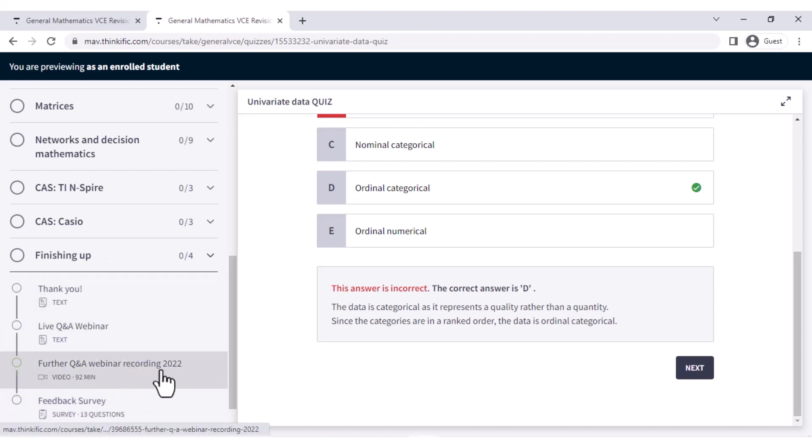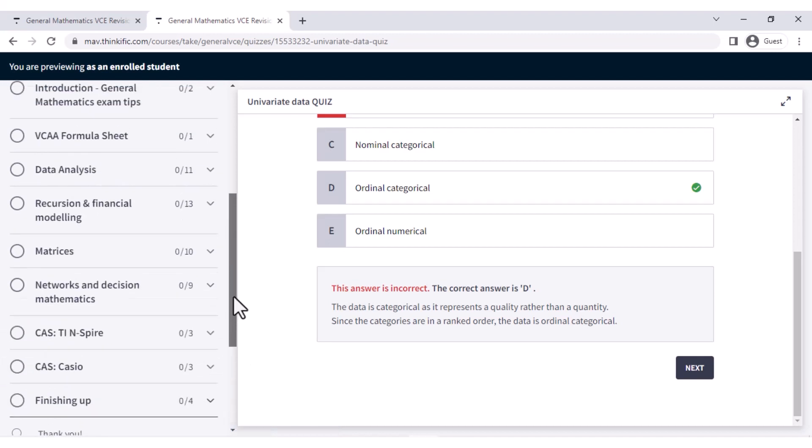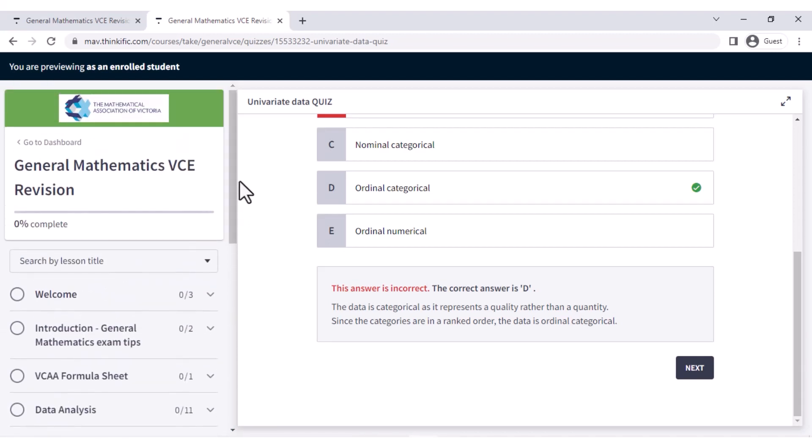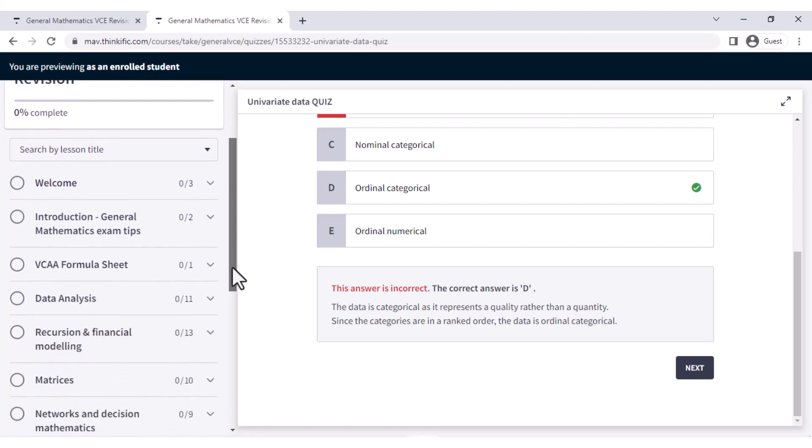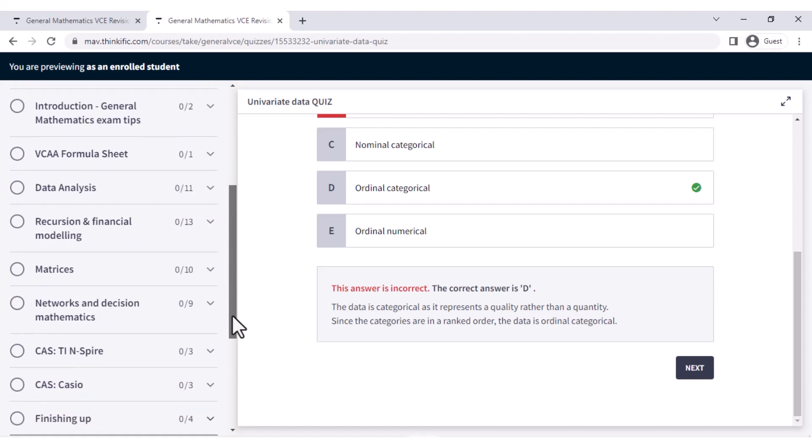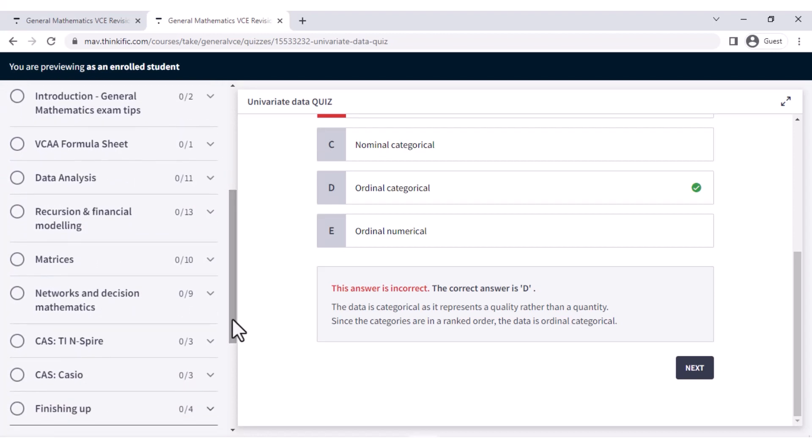There is also our recording of our webinar from last year. I did mention that we do do a webinar just before the exam that you can jump on. You can ask any of the VCAA assessors that are on there lots of questions that you might have about the upcoming exam, or you can look at obviously what the students asked last year as well. It's a great platform. It's got a lot of useful information for you there. And we hope that you have got some good tips out of this for general mathematics. And as we said, if you would like to sign up and enroll yourself in our online course, you can go onto the MAV website and do that. Thank you very much.